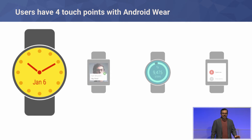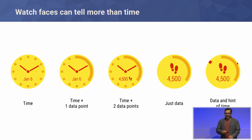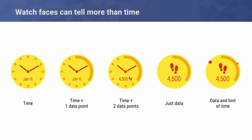Let's focus on watch faces, especially the interactive watch faces part. Looking at this continuum — a fictitious step counter watch face — on the left you have your classic watch face, just time. As you progress right, you add one data point and time, showing your step count around the tickers. You can add more data, another data point plus a ticker. Or at the far right, show just data with a little hint of time. When watch faces show data, they become more relevant to your personal experience and more interesting.